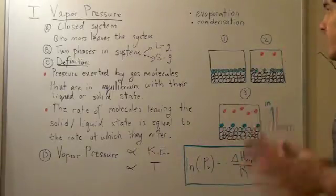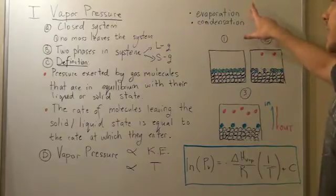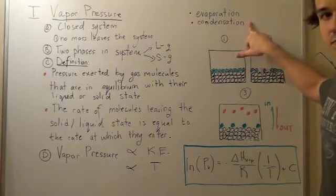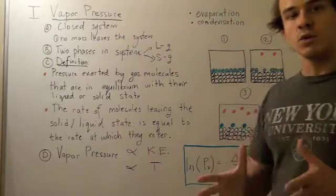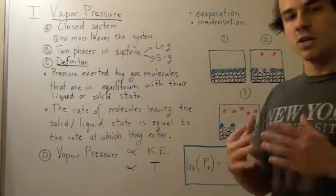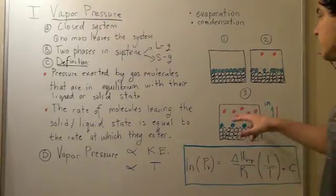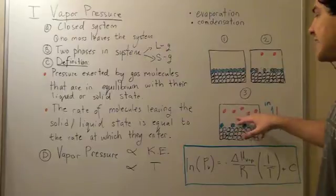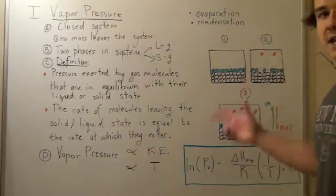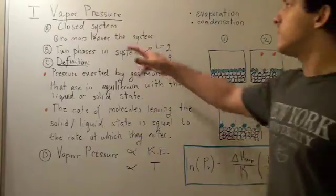When the rates of evaporation equal condensation, the state is in equilibrium. When the state is in equilibrium, we can measure the pressure exerted by the gas molecules on the walls of the container, and this pressure is called vapor pressure.